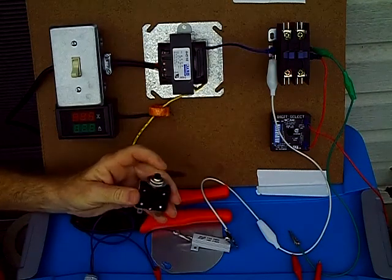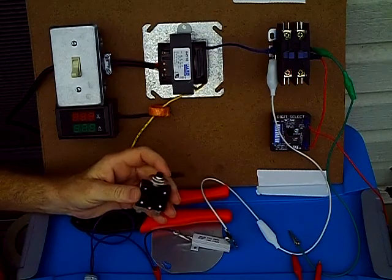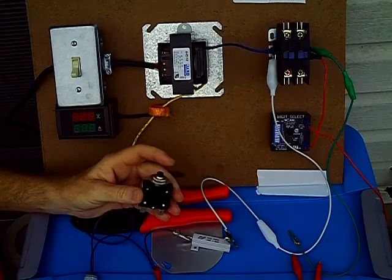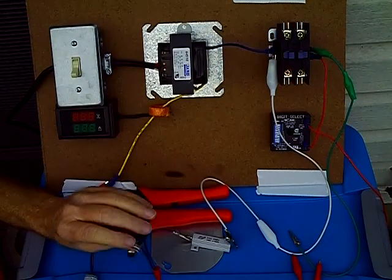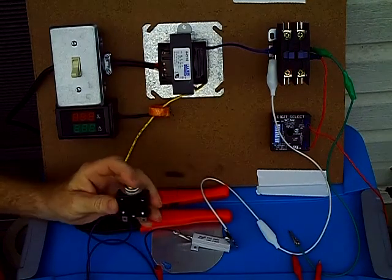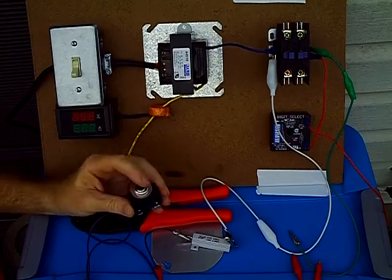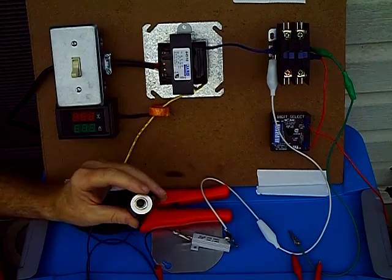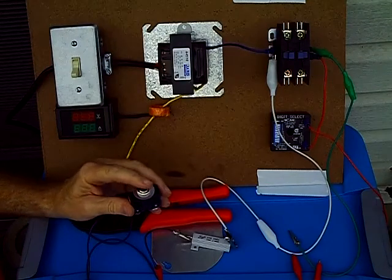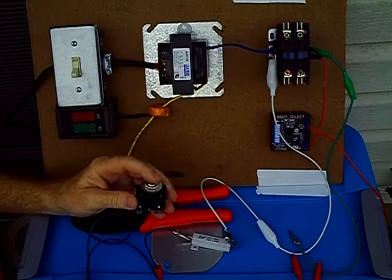When you get a short, it'll pop, and you've got to run back and forth to reset it. Now, a lot of contractors say this does the same job as the ShortPro, but it really doesn't. The only way these trip is it has to have a direct short on that 40VA transformer, so we're talking 9 to 12 amps. When it gives you a direct short, it'll pop and break the circuit.